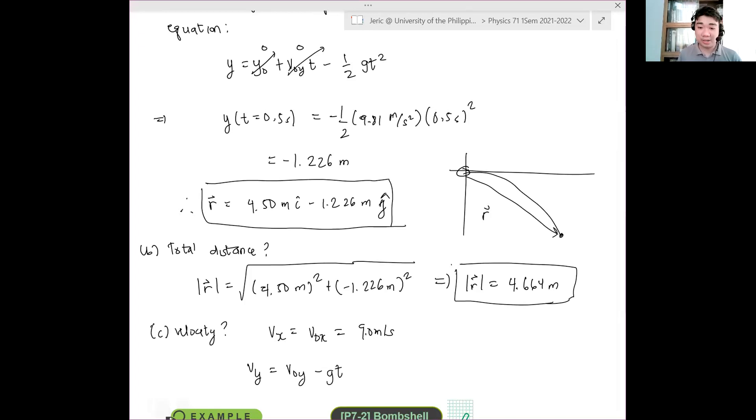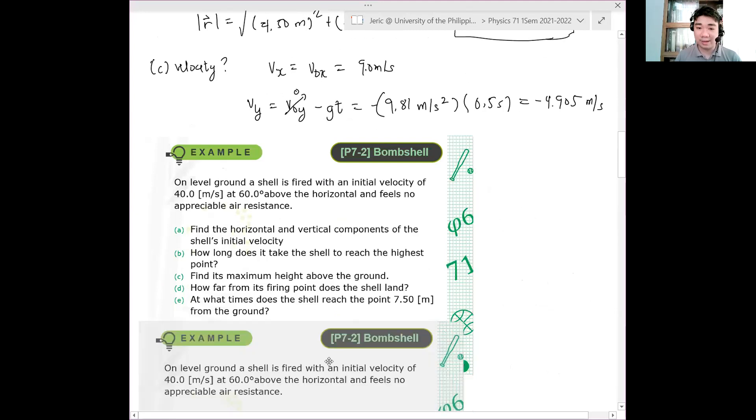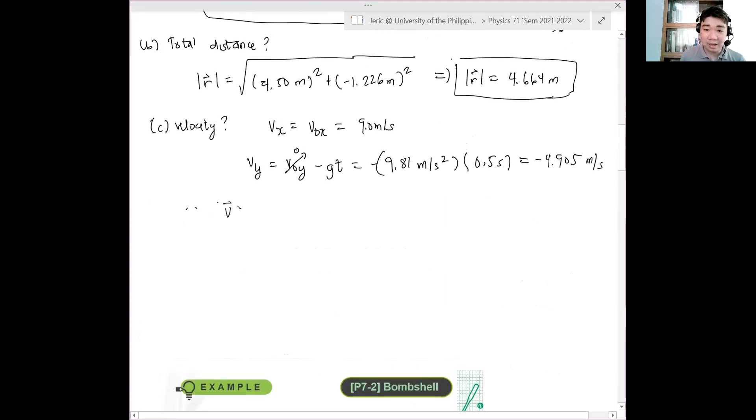I already said it earlier. So this is just zero, which means that you have minus 9.81 meters per second squared multiplied by the time, which is 0.5 seconds. Which means that this is just equal to minus 4.905 meters per second. Hence, the velocity as a vector is 9.0 meters per second i hat minus 4.91 meters per second j hat. That is the answer. You don't need to convert this to magnitude and direction simply because the problem doesn't require it. Are there any questions for this problem?